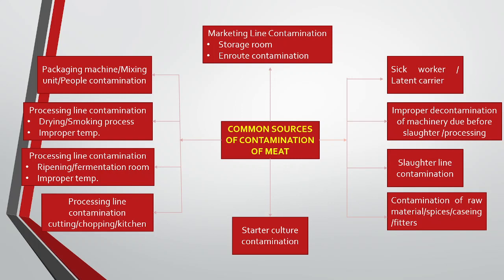Marketing line contamination can occur in storage rooms and during road transport as the product travels from one place to another. Packaging machines, mixing units, and people can also be sources of contamination. During processing — including drying and smoking — improper temperature provision is an important reason for contamination. Processing line contamination also occurs during ripening, fermentation, cutting, and chopping in the kitchen.